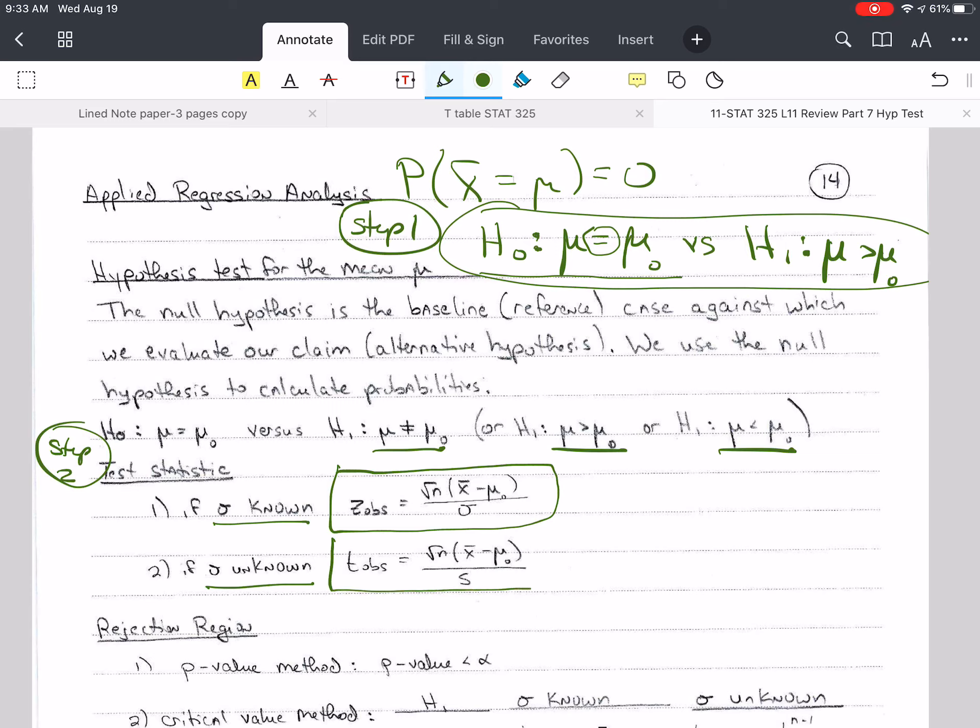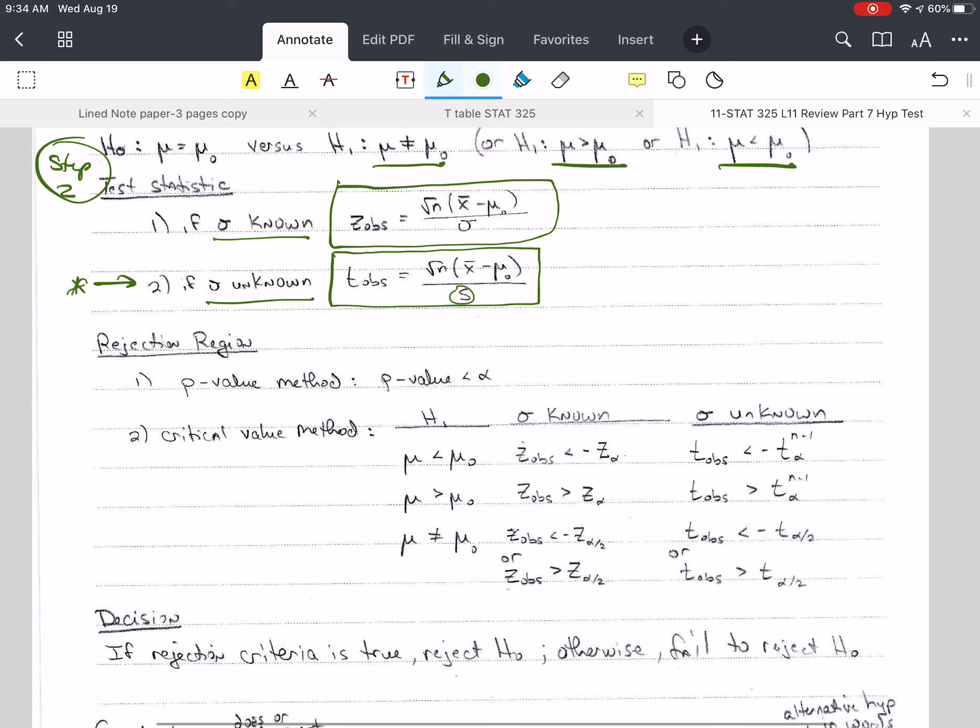And if we are estimating sigma, which is the usual case where we don't know sigma, then our test statistic is t observed, and it has s in the test statistic. So you should definitely have those written down.